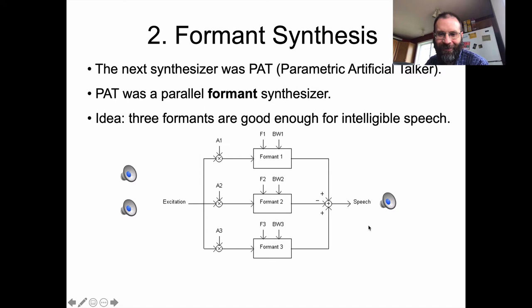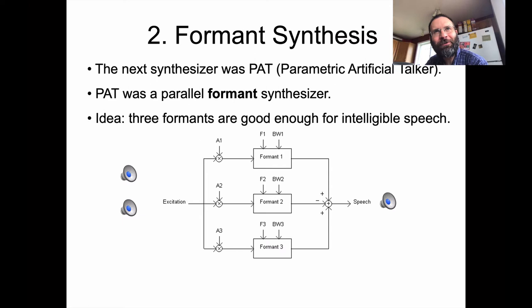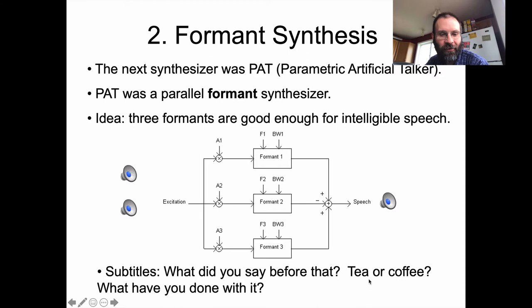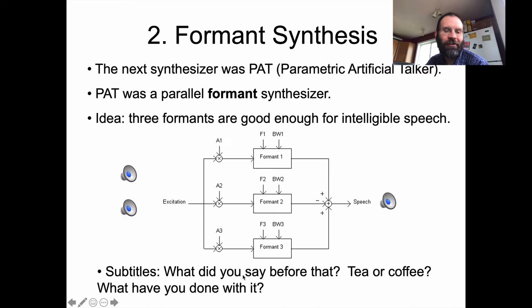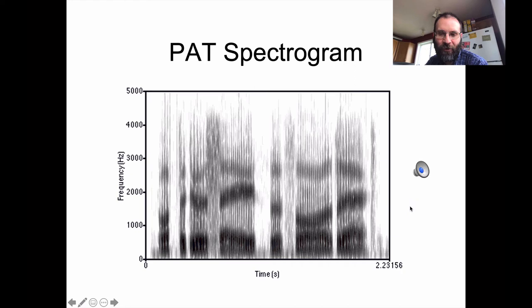Here's an example of what it produces. It's trying to say: 'What did you say before that? Tea or coffee? What have you done with it?' Once you know what it's saying, you can get a sense of how to process future versions of the same type of synthesis, but it's not easy from scratch — usually people get about 50% when I play it in class. The spectrogram from this machine is nice — you can see individual formants changing over time, and it looks like what we're used to seeing in natural human speech.